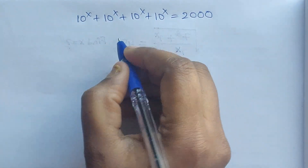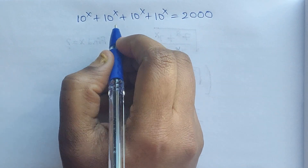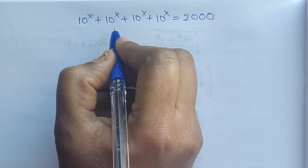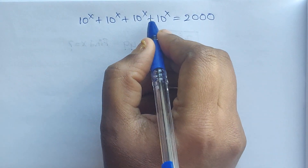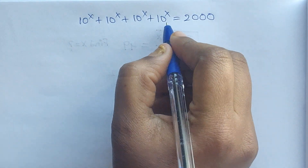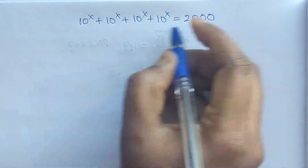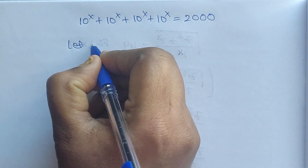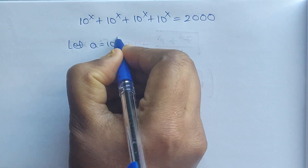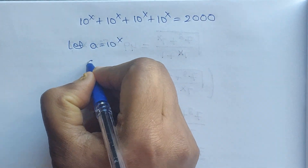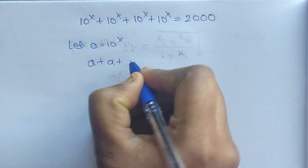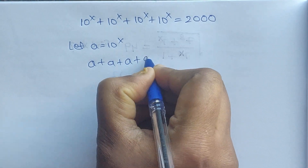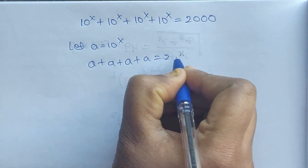Hello everyone, welcome back to my channel. Here we have one problem: how do we solve 10 to the power of x plus 10 to the power of x plus 10 to the power of x plus 10 to the power of x equal to 1000? Let's consider a equal to 10 to the power of x, so we have a plus a plus a plus a equal to 1000.